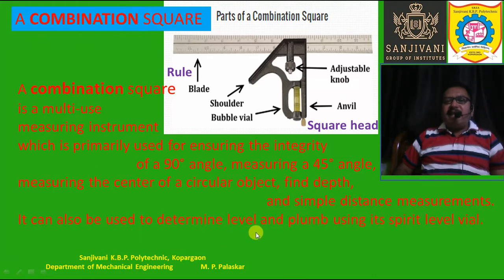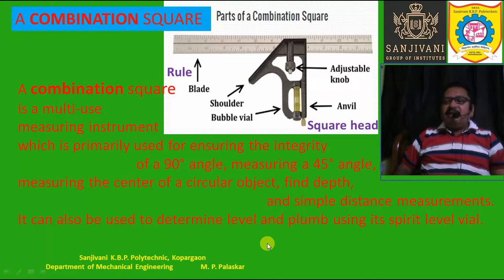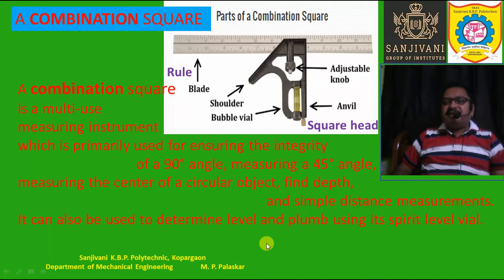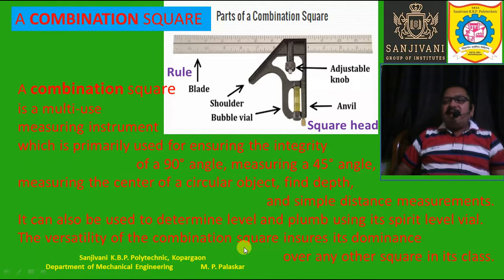The combination square can also be used to determine level and plumb using its spirit level — a bubble vial is present along with it. The plumb refers to the verticality of a particular object — whether a particular edge, straight line, or straight surface is exactly vertical can be determined. Thus this combination square is a versatile measuring device that dominates other measuring devices of its class.